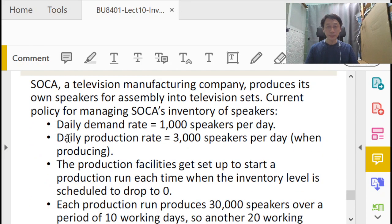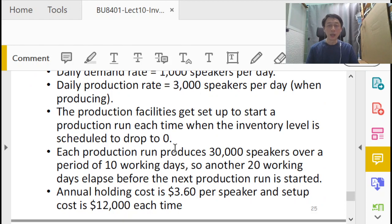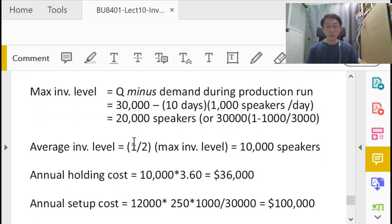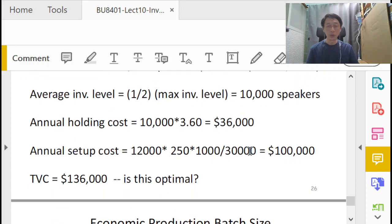Here's an example about a television manufacturing company, SOCA. They make their own speakers. Currently, the daily demand rate d is 1,000 speakers. The daily production rate is 3,000 speakers—notice the daily production is more than the daily demand, which is an important criteria. Currently, each production run produces 30,000 speakers over 10 working days. They give the holding cost and setup cost. The total cost is $136,000.